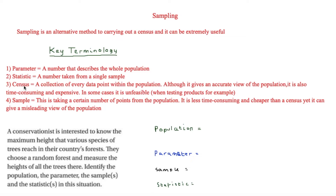A census is a collection of every data point within the population. Although it gives an accurate view of a population, it is also time consuming and expensive. In some cases it is also unfeasible — for example, if you're testing products you can't test every single product, especially if testing them requires breaking them.